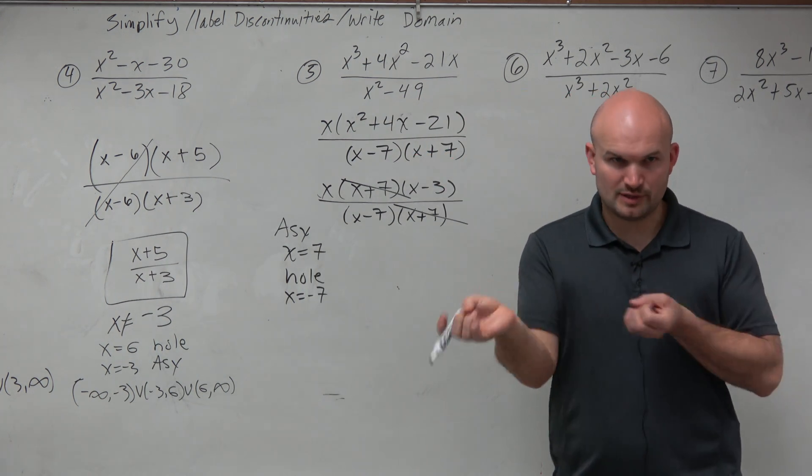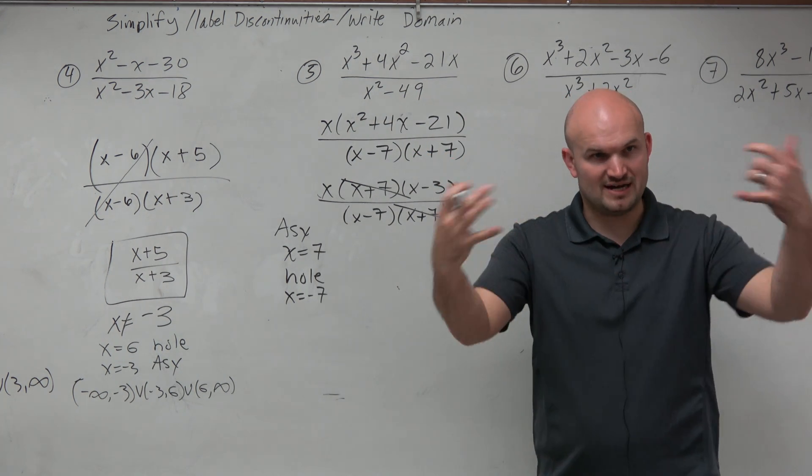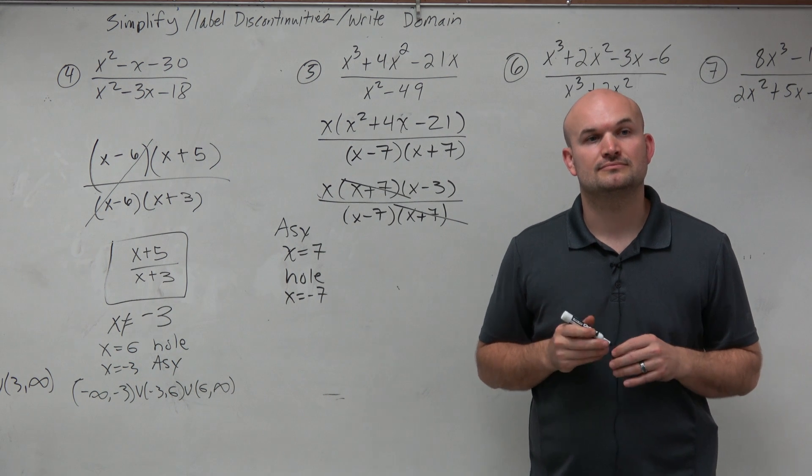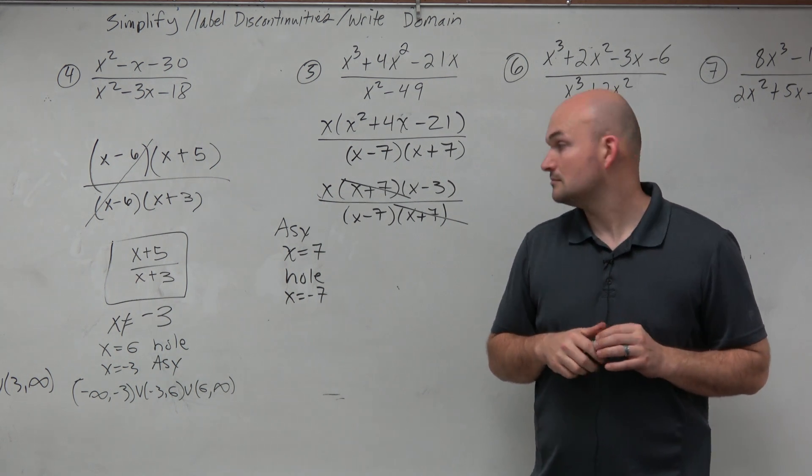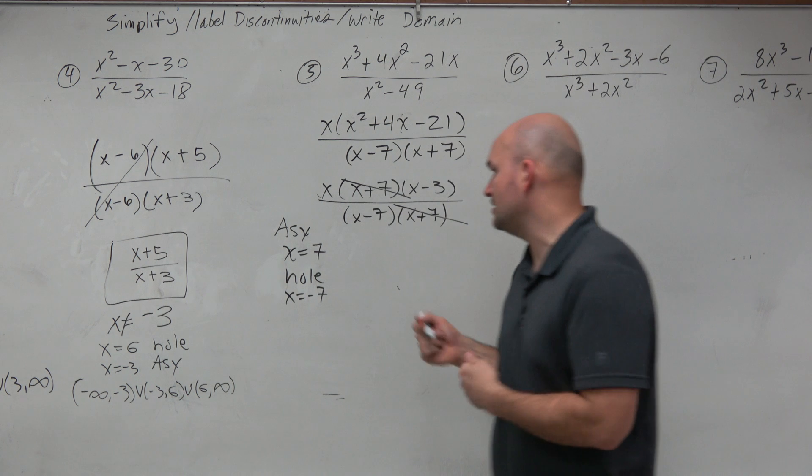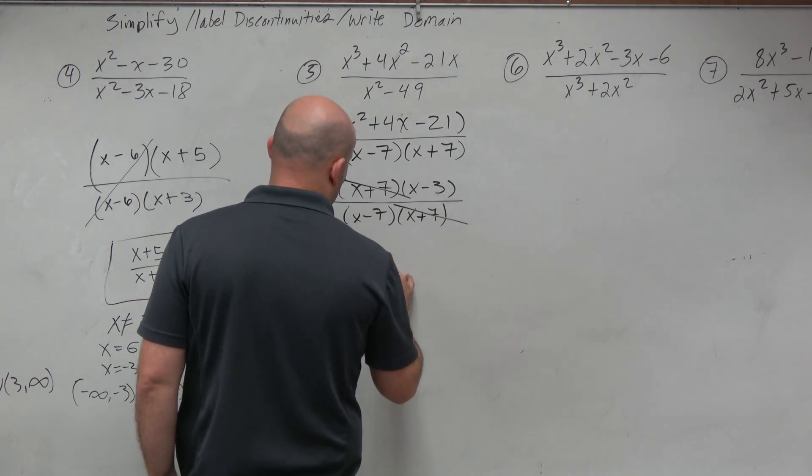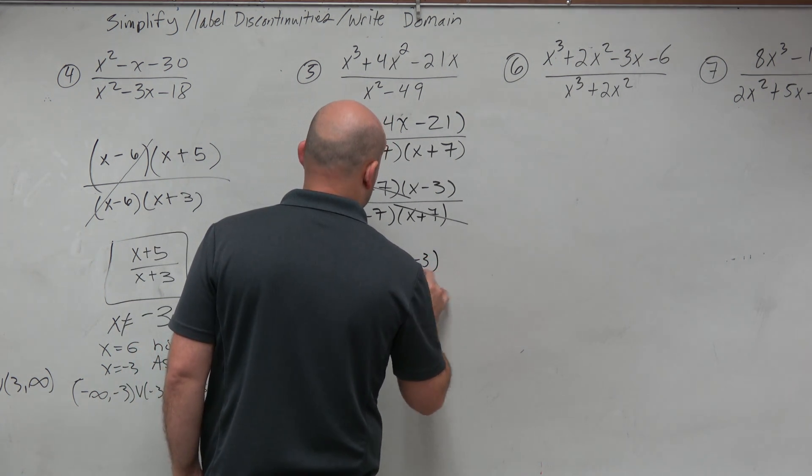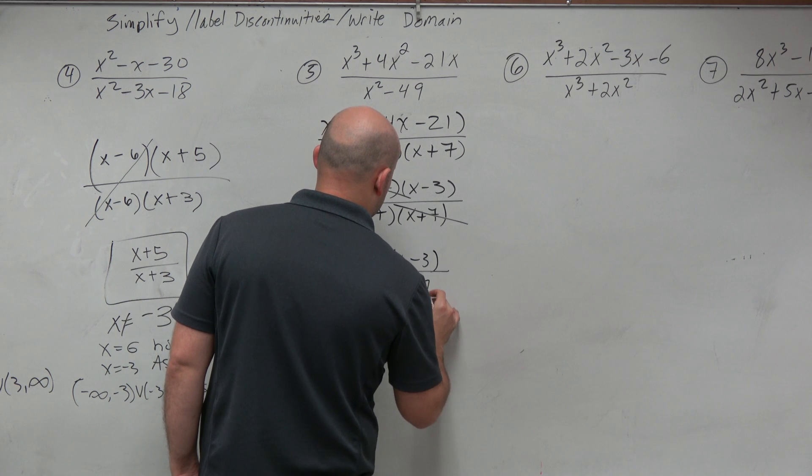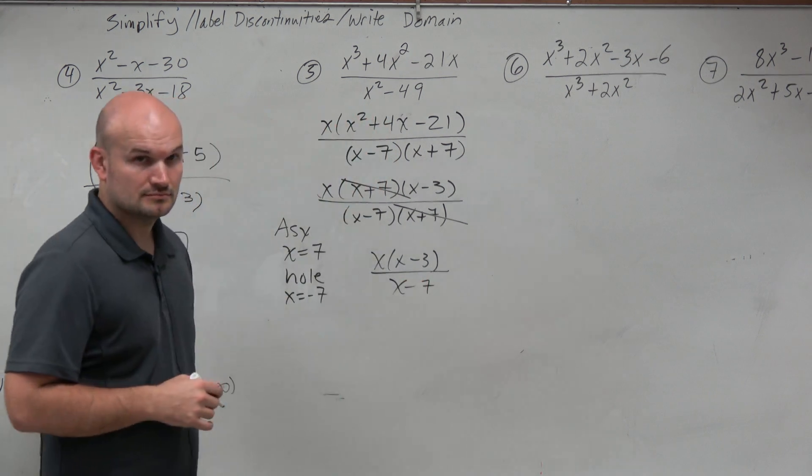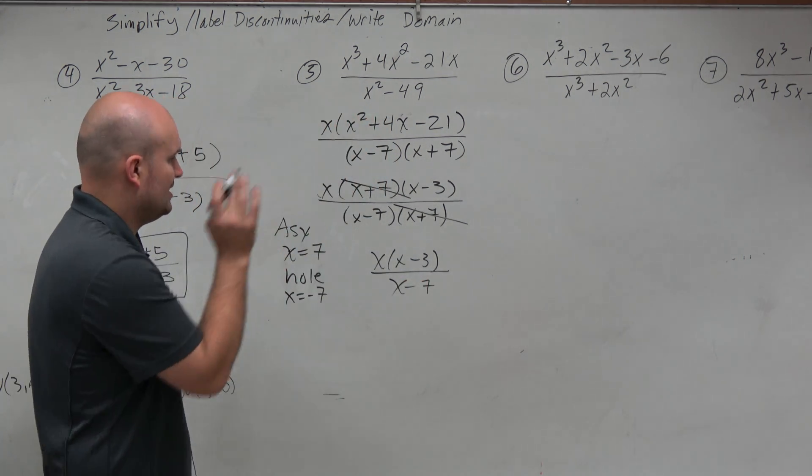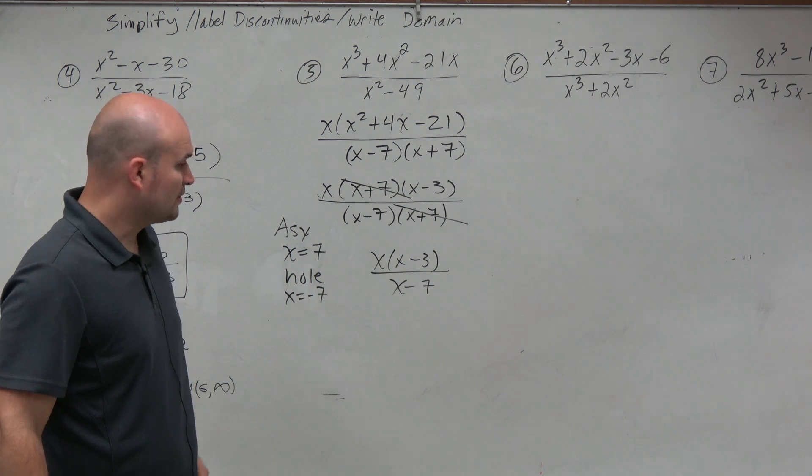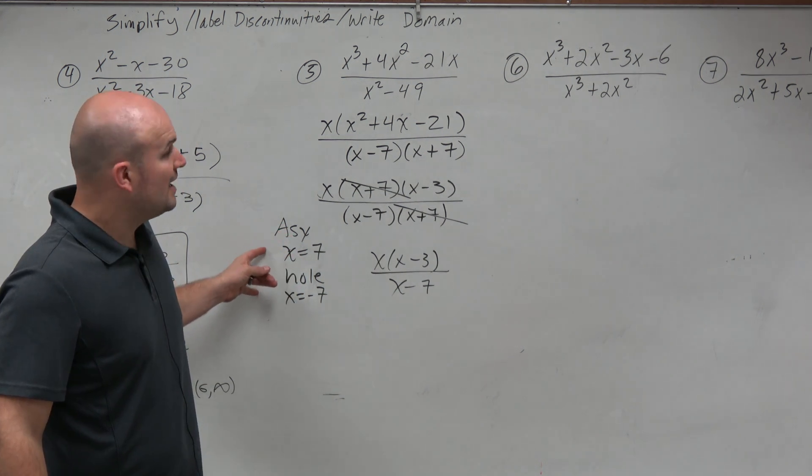Do you guys see how we can quickly find asymptotes and holes by factoring and then canceling? What would you do with the numerator? Well, the numerator is going to be left. I haven't simplified this yet. So the numerator is x times x minus 3, all over x minus 7. You could multiply the x if you wanted to, but it doesn't really matter. We're just looking for discontinuities and then writing the domain.